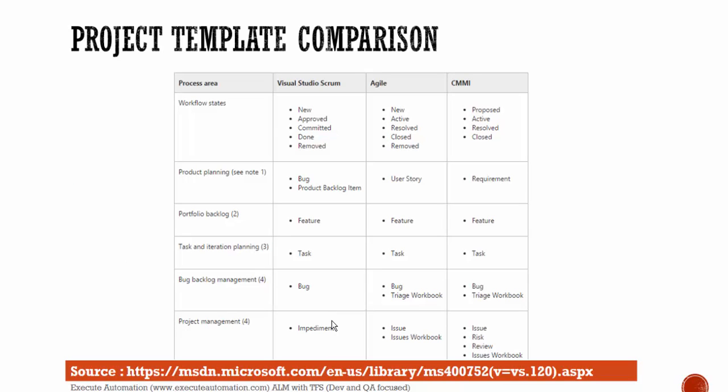Here is a process template comparison. You can see the workflow status states — for Visual Studio Scrum the states are: New, Approved, Committed, Done, and Removed. For Agile it will be: New, Active, Resolved, Closed, and Removed. For CMMI it is: Proposed, Active, Resolved, and Closed. Similarly for project planning, Scrum uses Bug and Product Backlog Item, whereas in Agile it is called User Stories and in CMMI it is called Requirement. The terminology changes slightly across process templates, but not much.